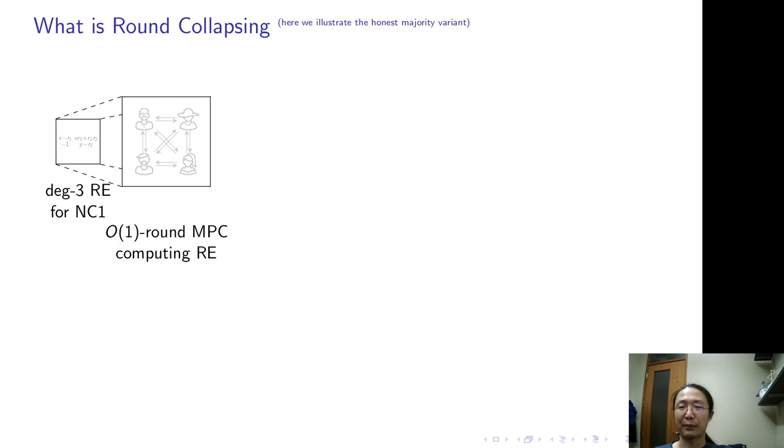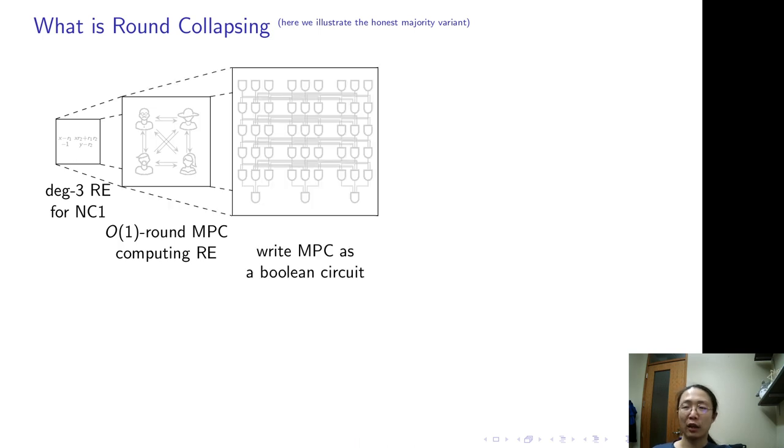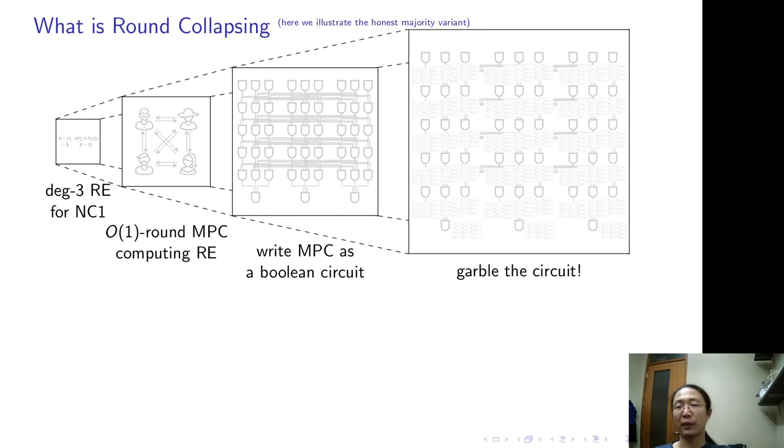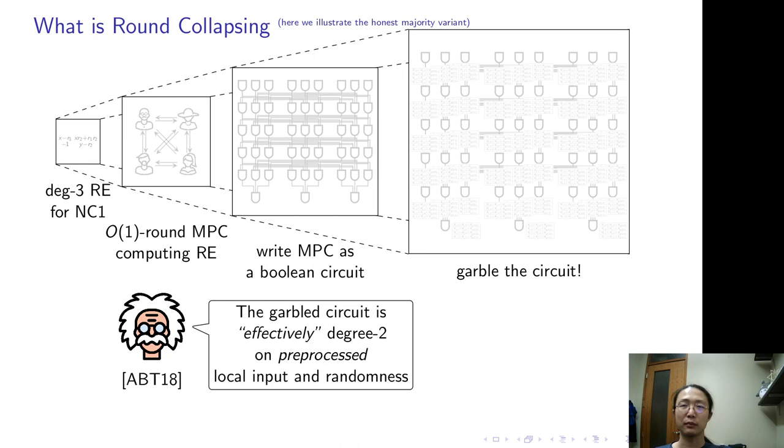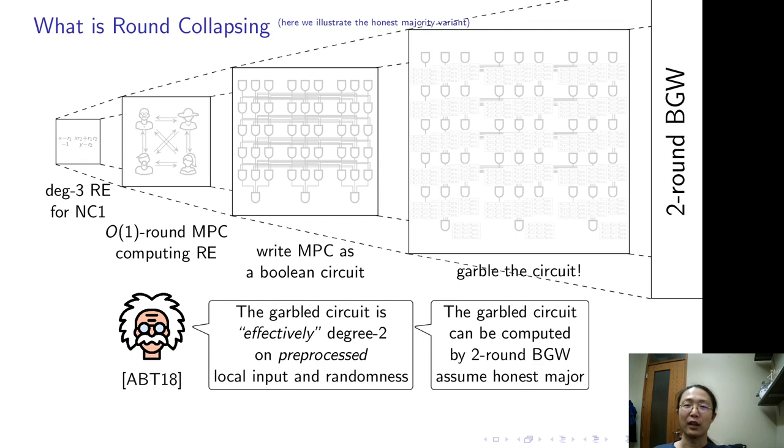Round collapsing is a technique used by previous two-round MPC. The first step is to write down the whole MPC as a single boolean circuit. Then consider the garbling of this boolean circuit. The garbling of this boolean circuit is effectively a degree-two function if the input and the randomness are locally preprocessed. I'll explain it in the next slide. So if it is a degree-two function, it can be computed by two-round BGW. That's the construction. The construction is gorgeous, but it's also quite complicated.